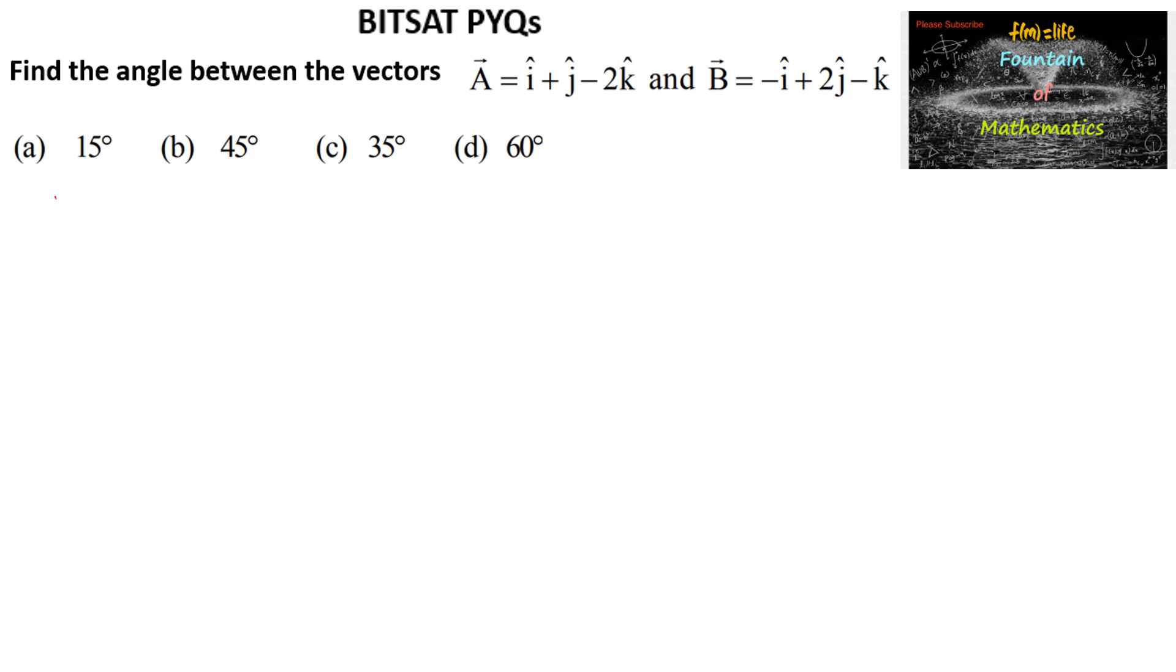Let us consider theta be the angle between two vectors, vector a and vector b. Vector a is equal to i plus j minus 2k and vector b is equal to minus i plus 2j minus k.